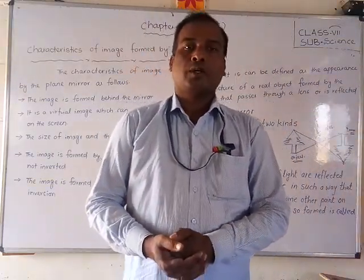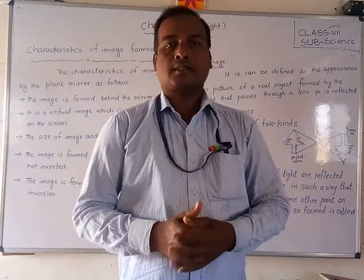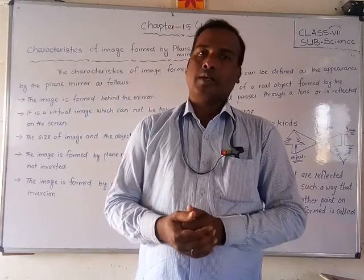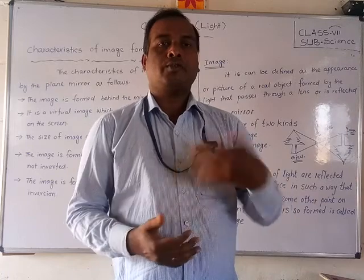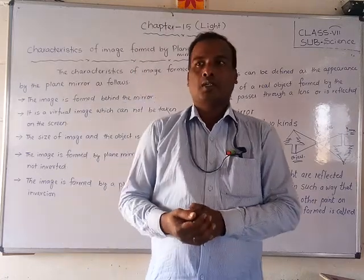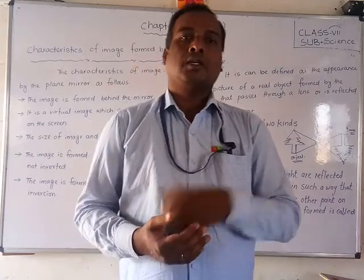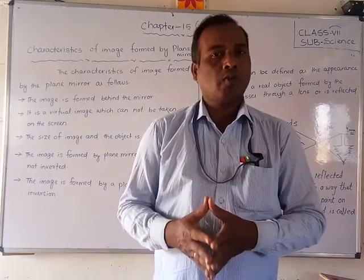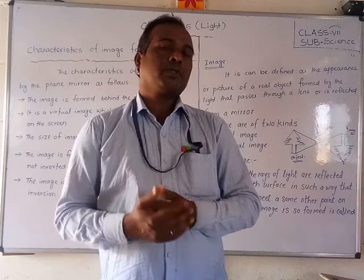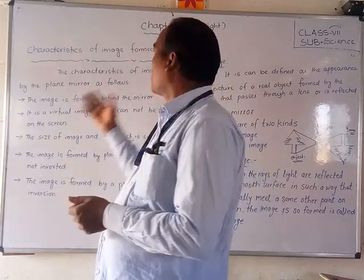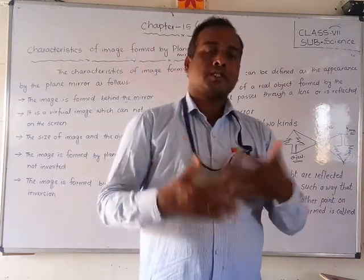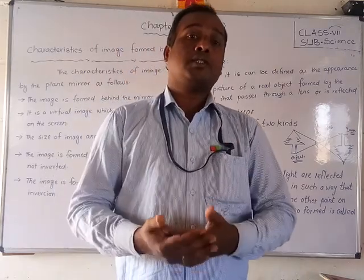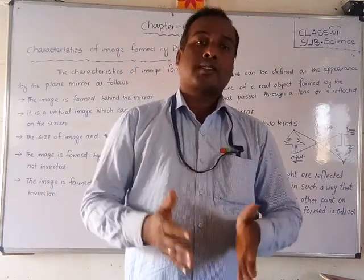Hello friends, good morning and welcome back to our online class for Science 7th standard students. Today we are going to continue our 14th chapter, which is about light. In the previous video, we already explained different types of light, regular and irregular reflections, convergent and divergent beams of light. Today we are going to discuss the characteristics of the image formed by a plane mirror.